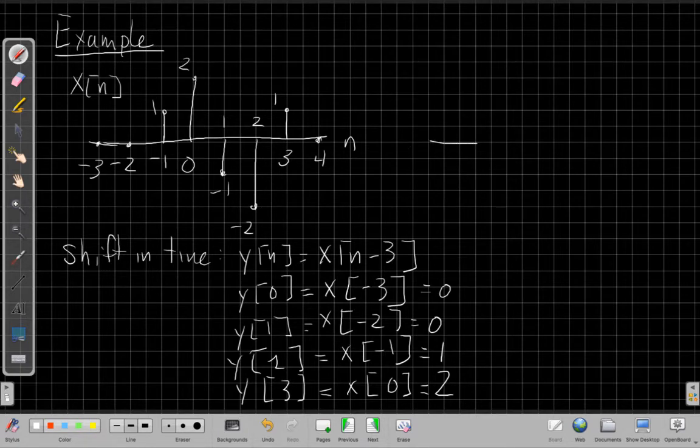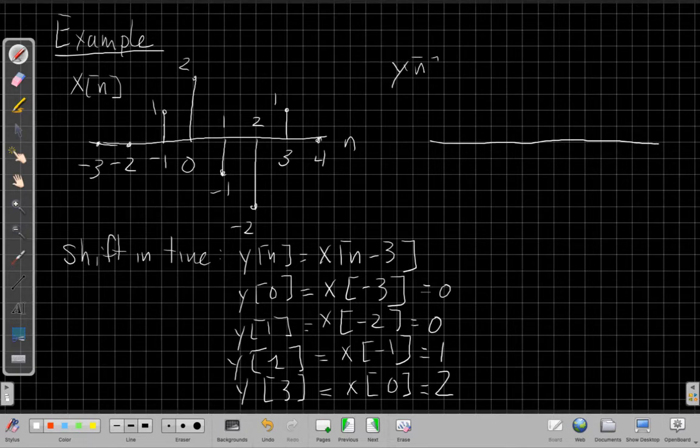And I can go along through that pattern. If I want to graph my new signal, I've got to label clearly. Here's y[n]. And this is my time axis n. I'm going to start this, say, at 0. At n equals 0, it's 0. At n equals 1, it's 0 still.